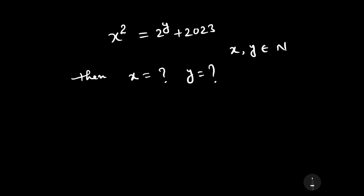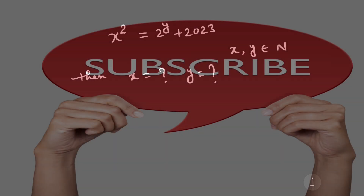Welcome to our YouTube channel Saval Bawal. Our question is: x² = 2^y + 2023. If x and y belong to the natural numbers, then we have to find the values of x and y.